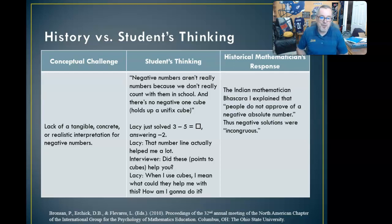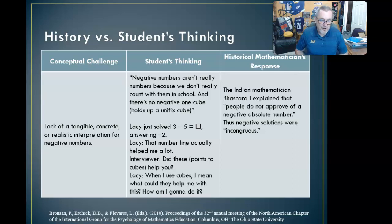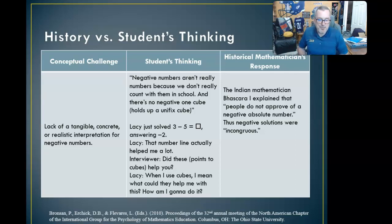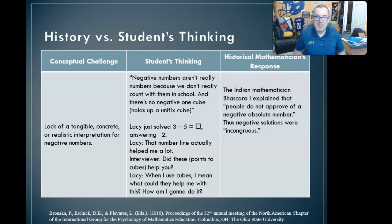Mathematicians likewise struggled. There's an Indian mathematician named Bhaskara — Bhaskara I — who explained that people do not approve of negative absolute numbers. Thus, negative solutions were incongruous — just impossible.